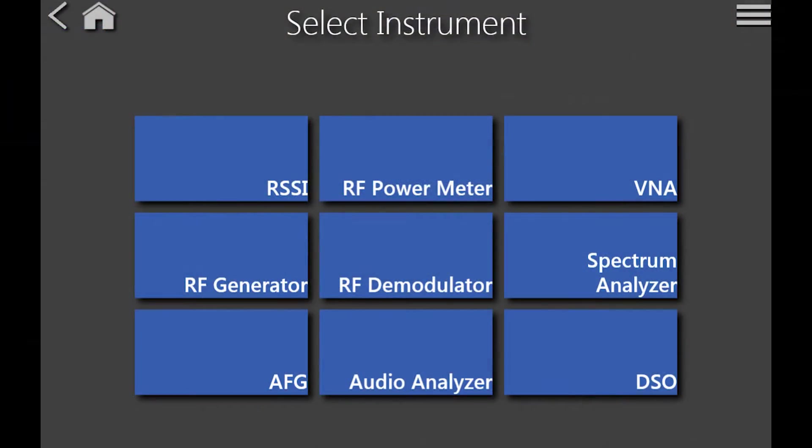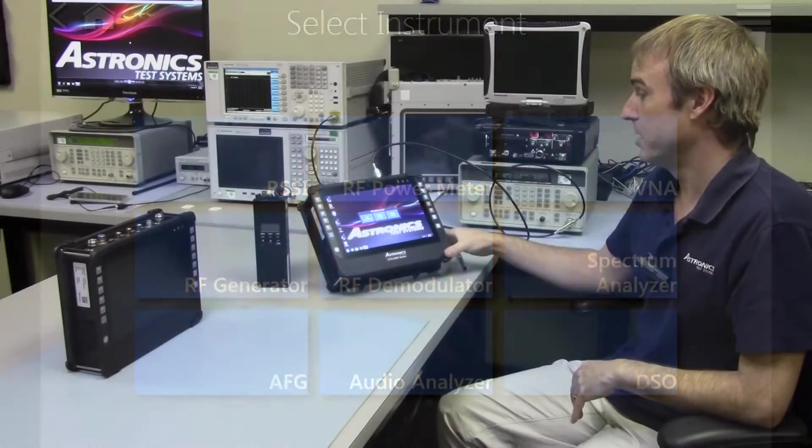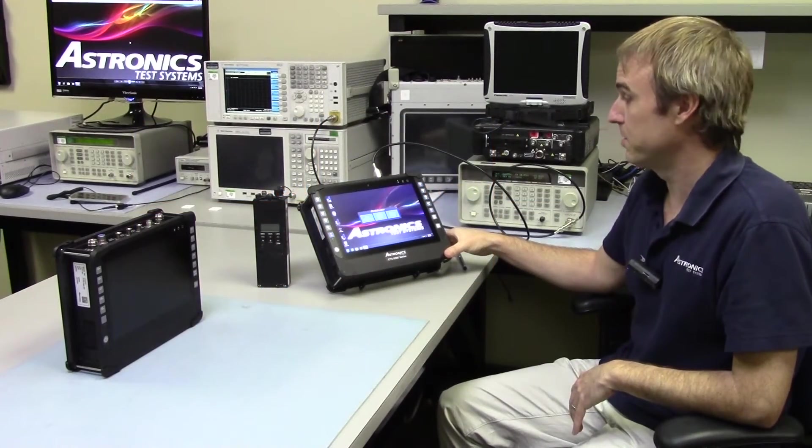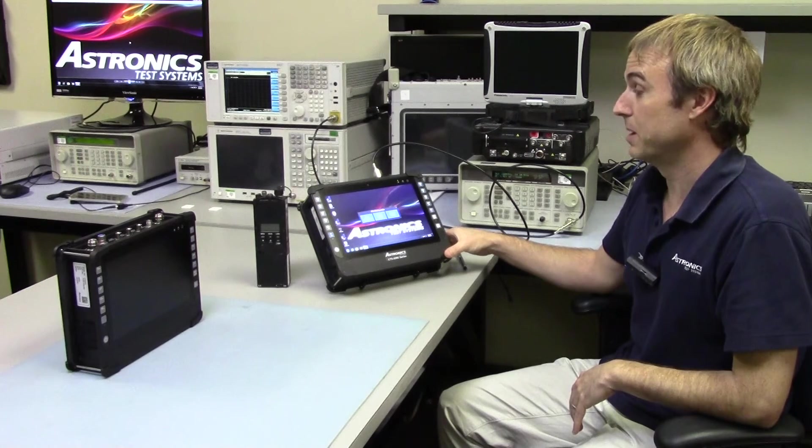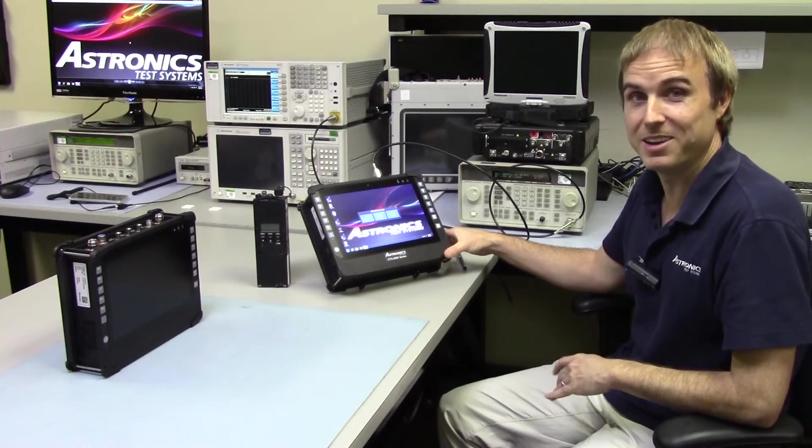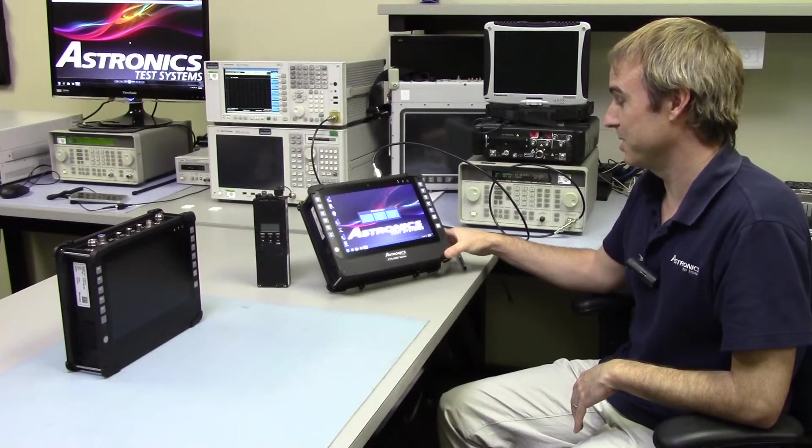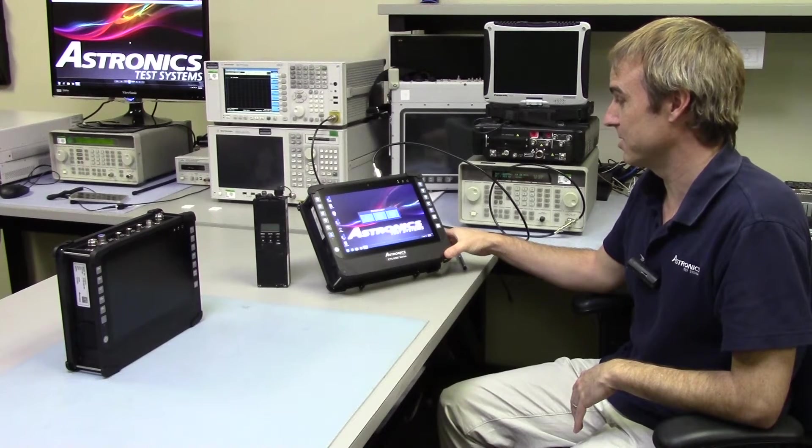And each of those, very expensive on their own. This has a dozen different meters within the nine pieces of test equipment inside of the CTS 6010.